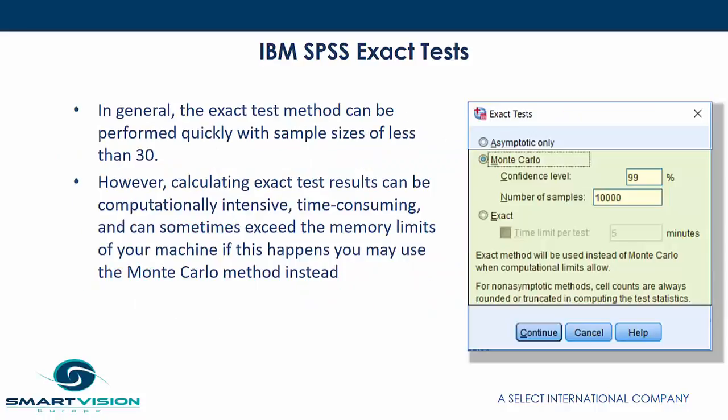In general, the exact test method can be performed quickly with sample sizes of less than 30. However, calculating exact test results can be computationally intensive, time consuming, and can sometimes lead to you exceeding the memory limits of your machine. And if that happens, you may use the Monte Carlo method instead.